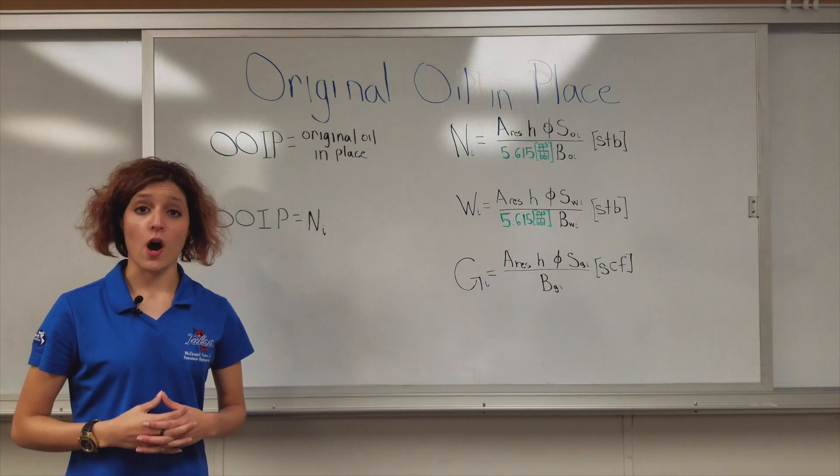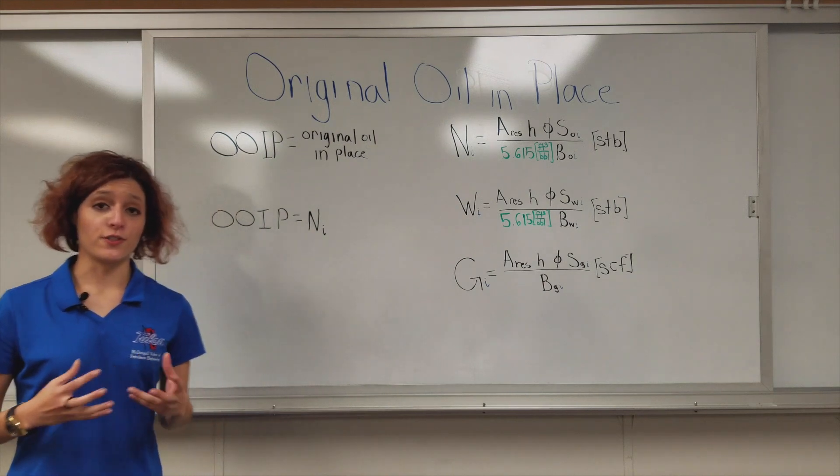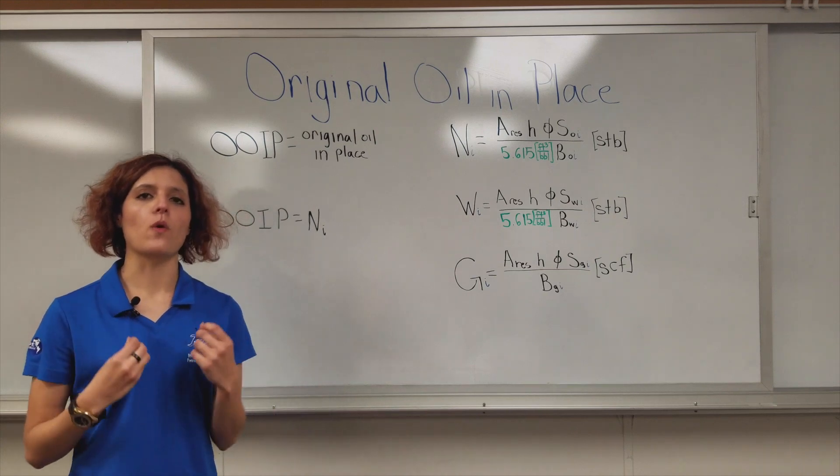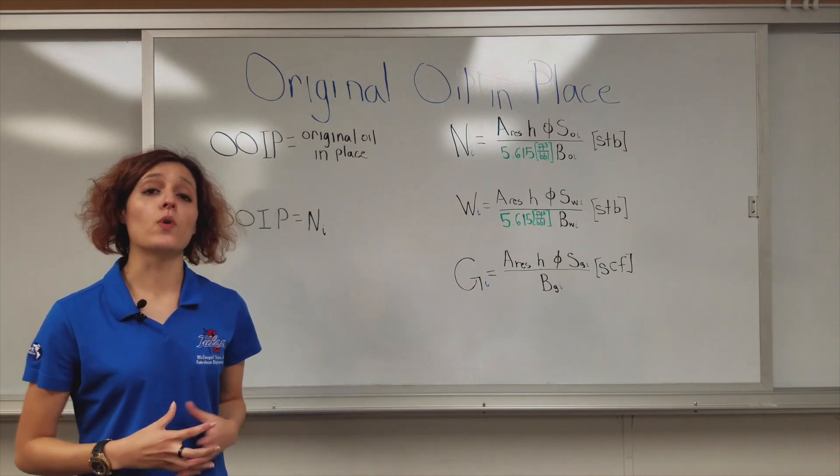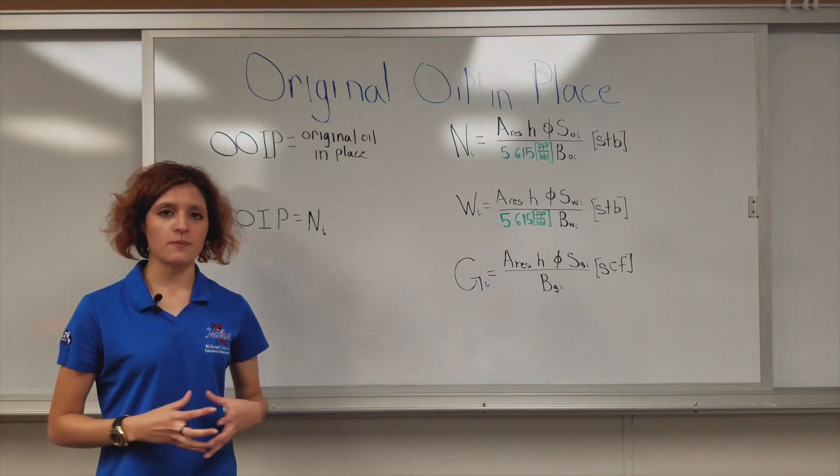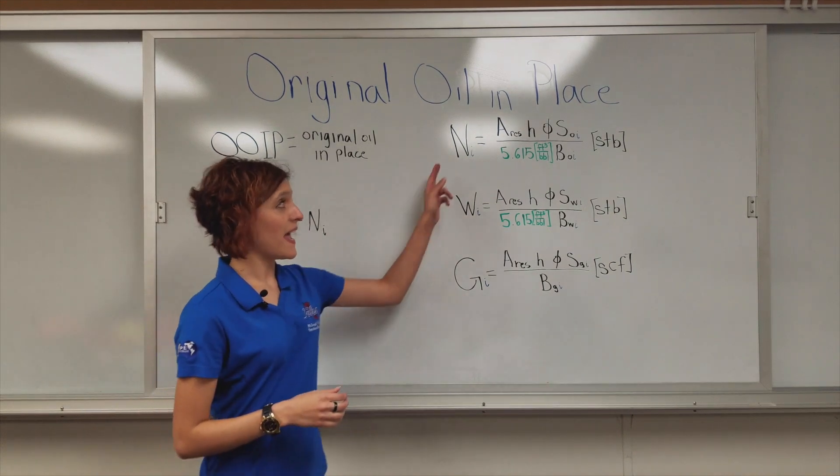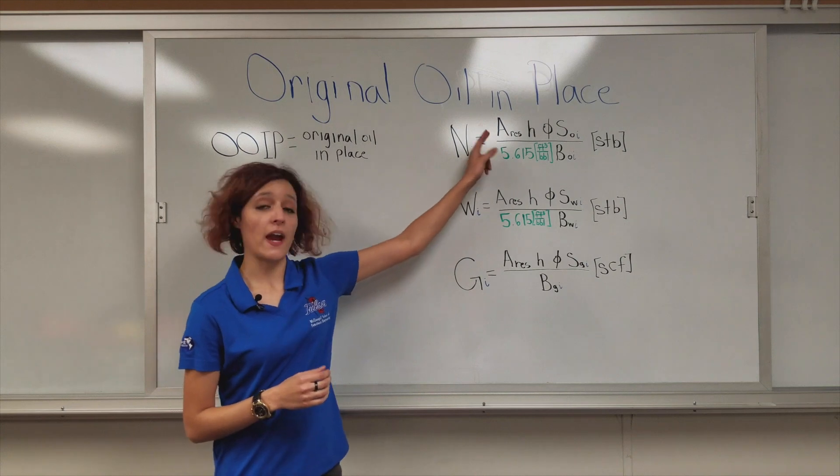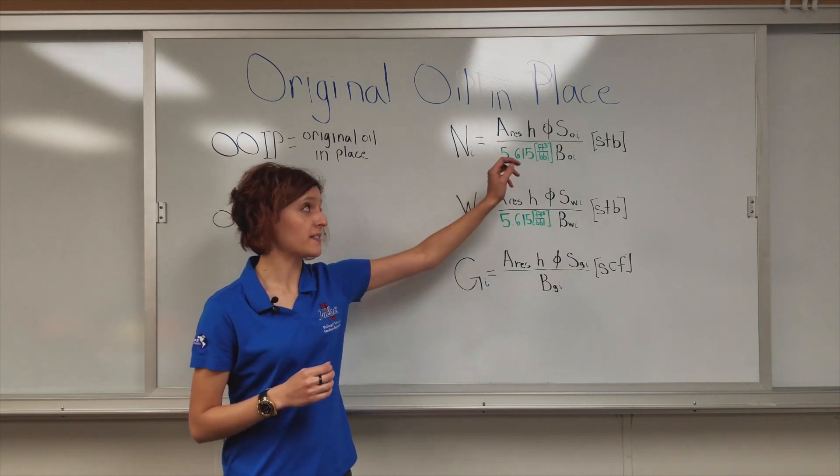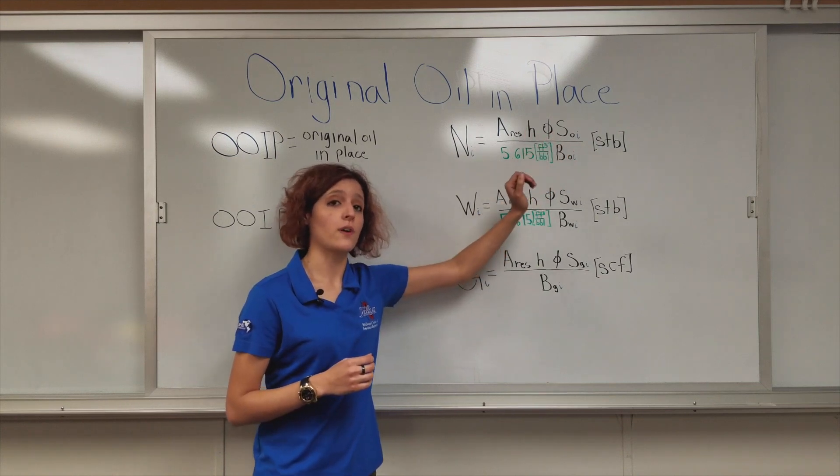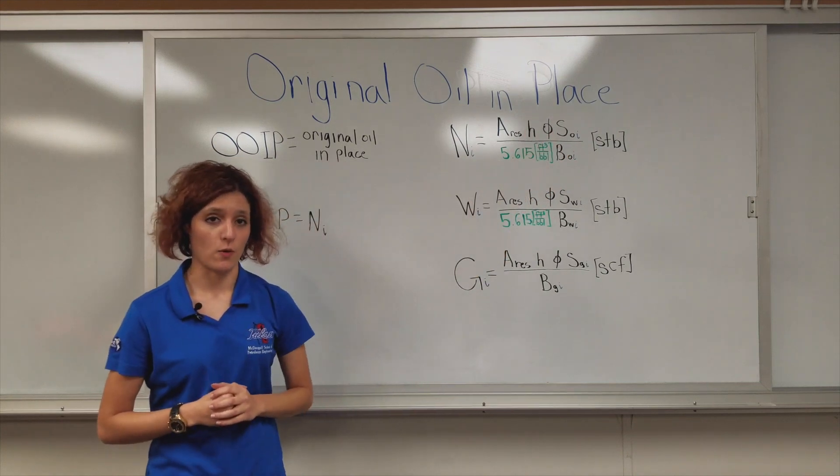Original oil in place, OOIP, denoted as N sub I. And what this is, is how much oil is in our reservoir before we started production. And this can be calculated by combining some reservoir properties. N sub I is equal to the area of our reservoir times its height times the porosity and the saturation of oil initially, all over our initial formation volume factor for oil, giving us units of STB.